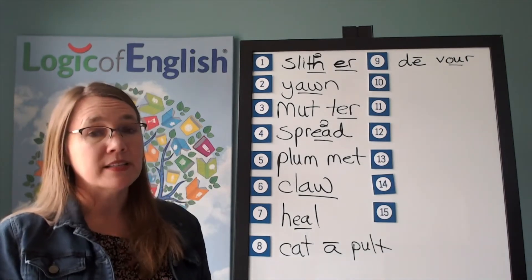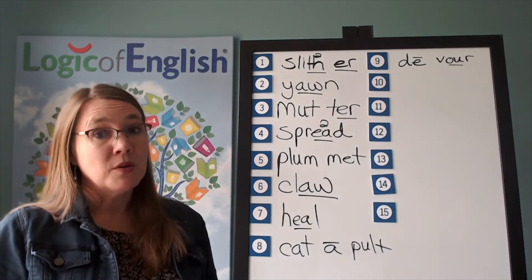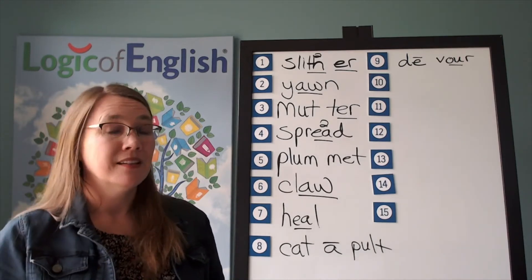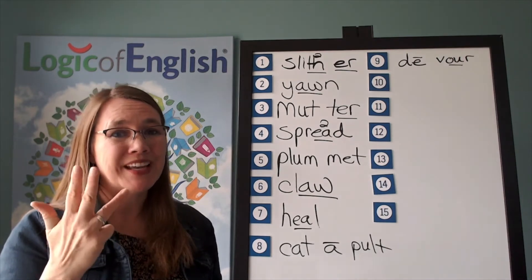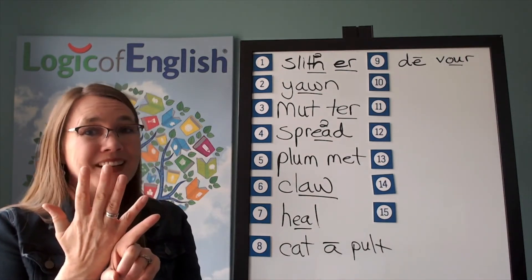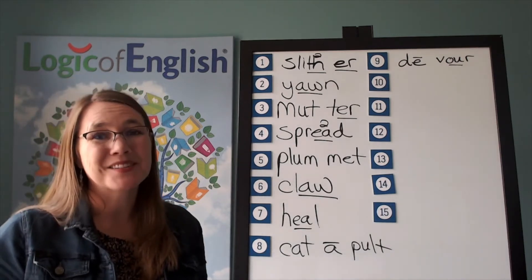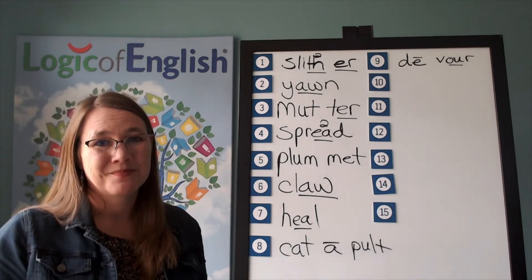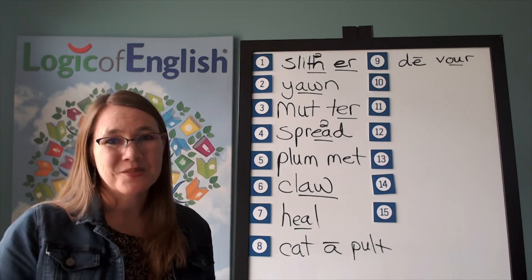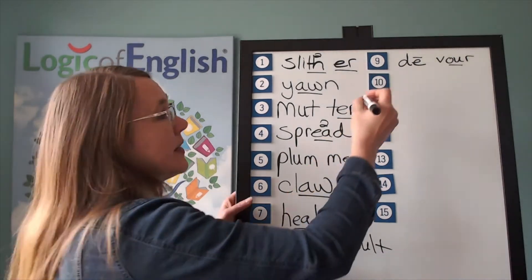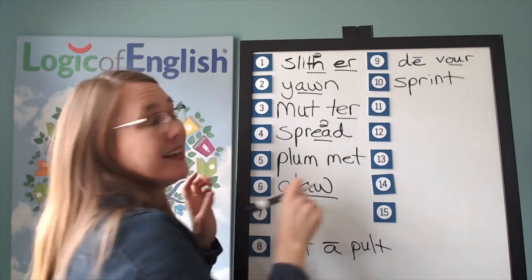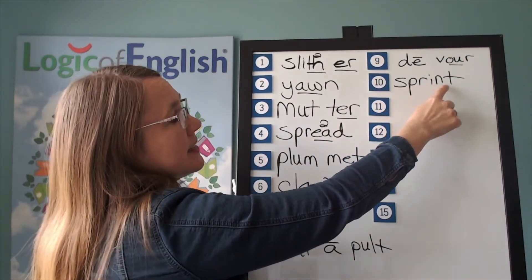The next word is sprint. The track team ran a sprint. Go ahead and say sprint. Let's sound it out: s-p, r-i, n-t — sprint. It's written just like it sounds. Go ahead and write sprint. Help me to write it: s-p, r-i, n-t. Let's read it: sprint.